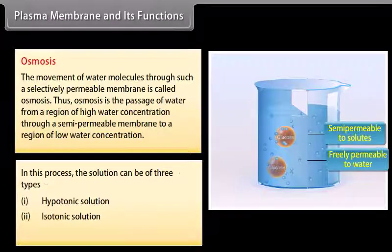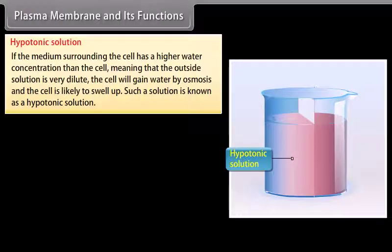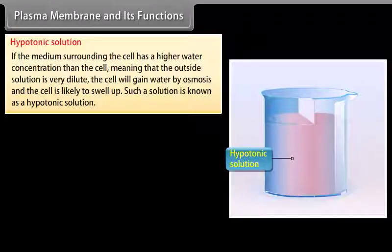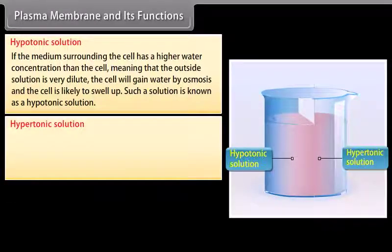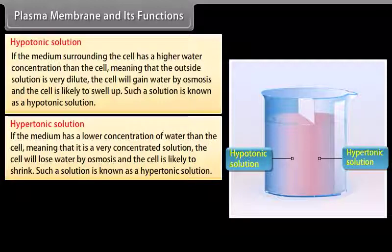Hypertonic solution: If the medium surrounding the cell has a higher water concentration than the cell, meaning the outside solution is very dilute, the cell will gain water by osmosis and is likely to swell up. Such a solution is known as a hypotonic solution. If the medium has a lower concentration of water than the cell, meaning it is a very concentrated solution, the cell will lose water by osmosis and is likely to shrink. Such a solution is known as a hypertonic solution.